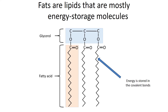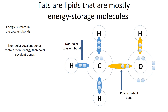Energy is stored in covalent bonds, which are created by the sharing of electrons. It turns out that electrons have more energy the further away they are from a nucleus. So when you have non-polar covalent bonds, the electrons are being shared equally between the two nuclei of two different atoms. Between carbon and hydrogen, when they're covalently bonded, those bonds have lots of potential energy.